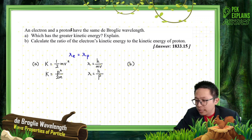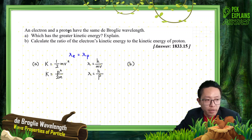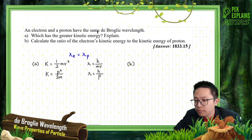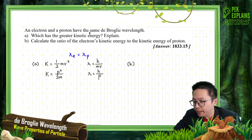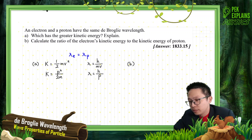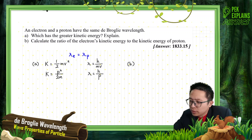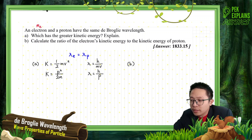An electron and a proton have the same De Broglie wavelength. This is the electron — we have the electron — just put the mass of electron. And this is a proton.